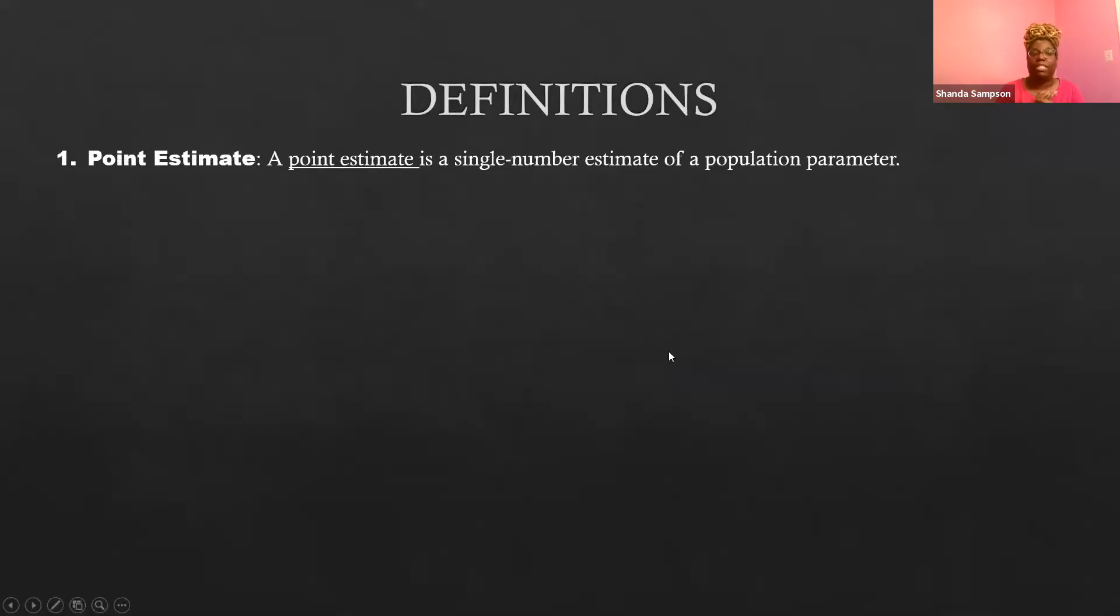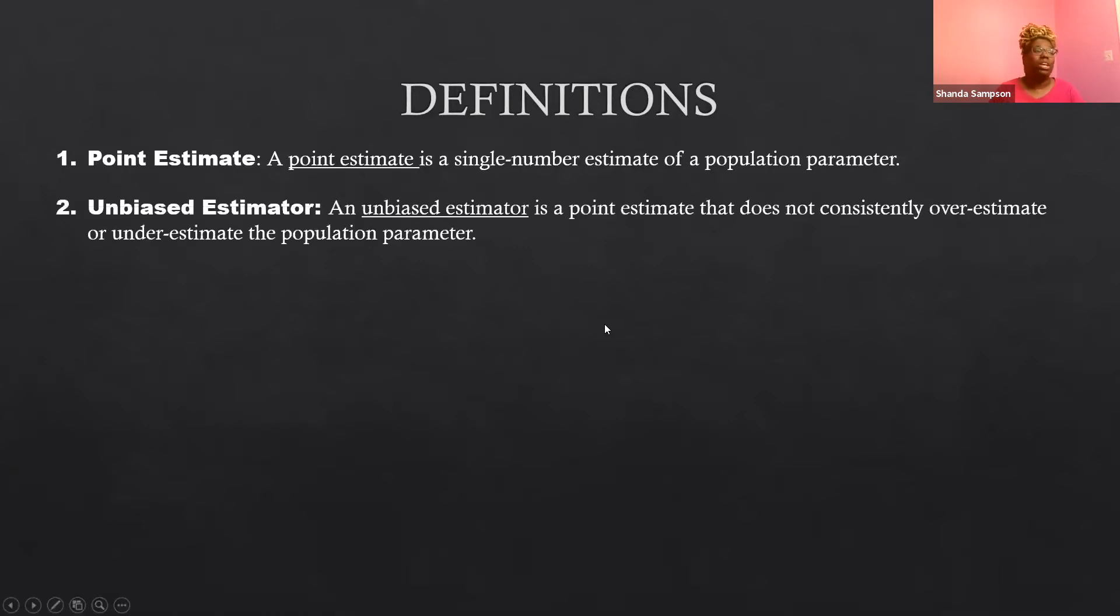So we use one particular number to estimate our population. We call that a point estimate. So now let's get into these definitions. The first definition is point estimate. A point estimate is a single number estimate of a population parameter. So one number that tells us about this population parameter.